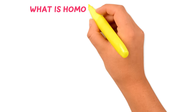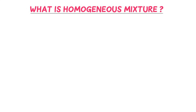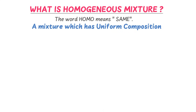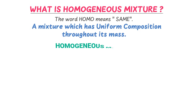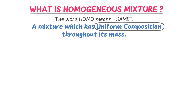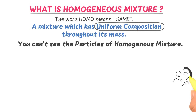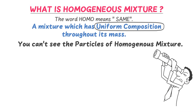Now, what is a homogeneous mixture? Well, the word homo means same. Thus, a mixture which has uniform composition throughout its mass is called a homogeneous mixture. By uniform composition, we mean that you cannot see or observe the particles of a homogeneous mixture with the naked eye.